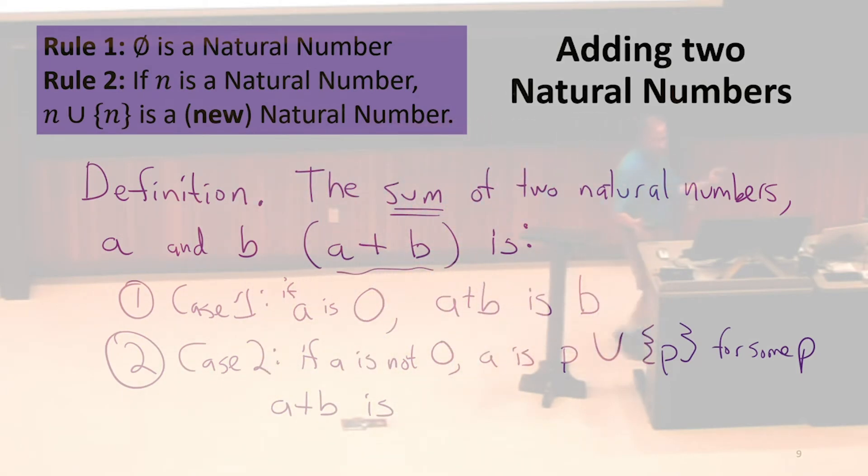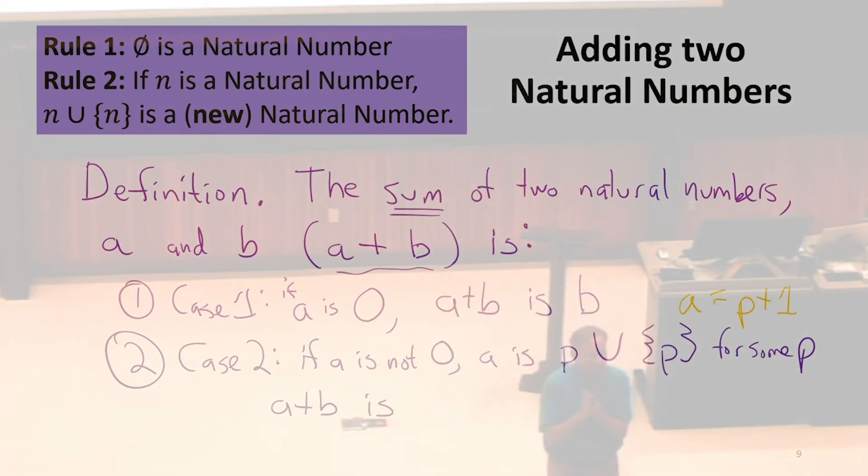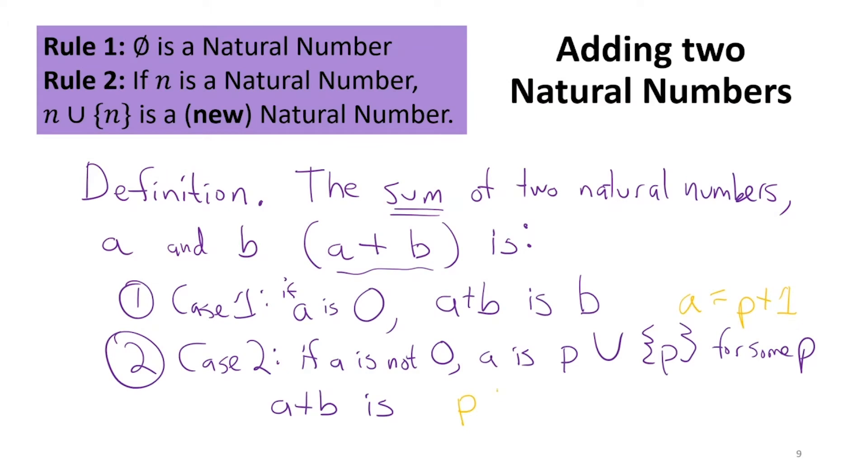The notation is hard here. And we're using it to be like sets. But if you think about what it really means, this is a is p plus one. The intuitive meaning of how we define the union of the set of the thing. Yeah, so what's that? Good. The intuitive thing we wanted to say is a plus b is now p plus b plus one. With our funny notation, what that means is the plus is what we're trying to define. So this is a recursive definition. We're defining plus in terms of plus. And this is unioned with that p.